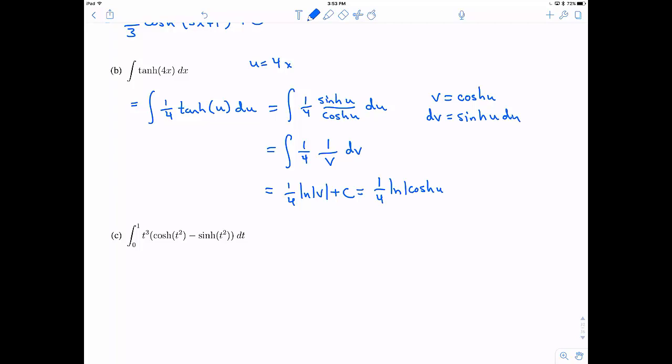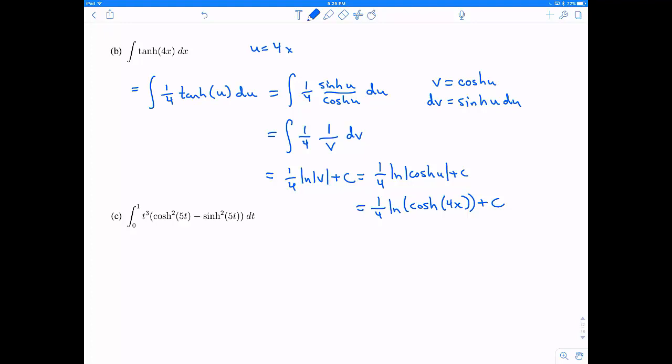And so this is going to be natural log of the absolute value of hyperbolic cosine of u. And then the claim is, well, hyperbolic cosine is always positive. It's always greater than 1. So I don't really need the absolute value. And u is the same thing as 4x. So there we go, my final answer.